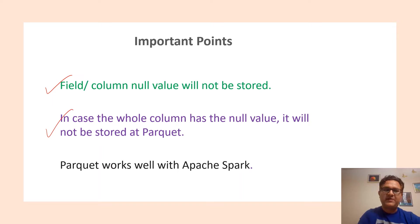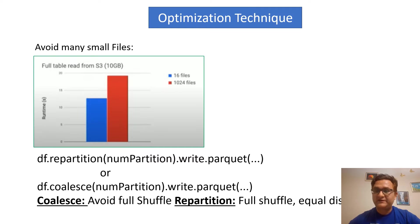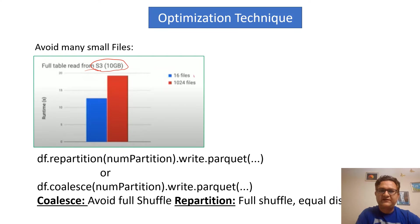Third, Parquet works well with Apache Spark. One of the optimization techniques we will discuss in detail — this is very important if you are working as a developer in your organization. For example, we have a full table read from S3 that had 10 GB of data. If that 10 GB is stored in 16 files, it takes close to 12 seconds. But if you split that data into 1024 files, it takes close to 18 seconds.